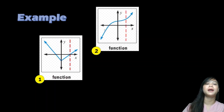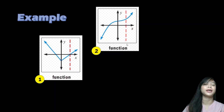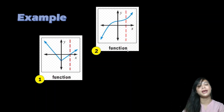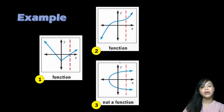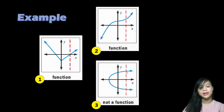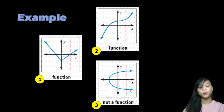Another example shows a graph where the dashed red vertical line touches only one point, so it is a function. However, the third graph is a parabola opening to the left side. When we draw a vertical line, it passes through two points. So this means it is not a function.